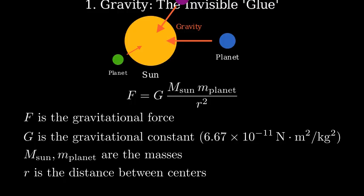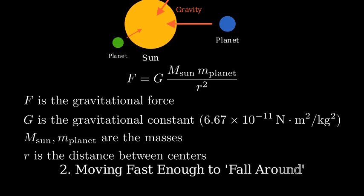But if the Sun is constantly pulling on the planets, why don't they crash into it? The answer lies in how fast the planets are moving.